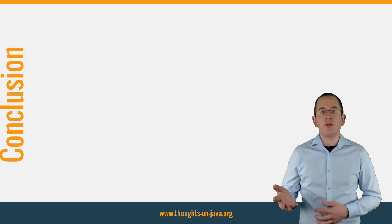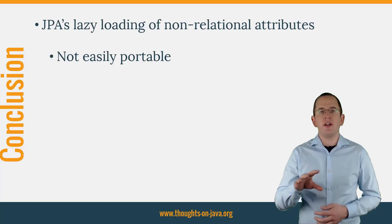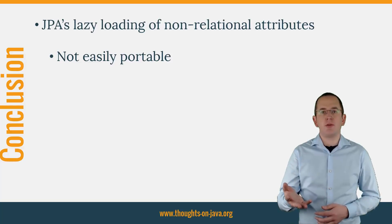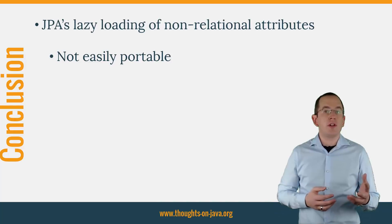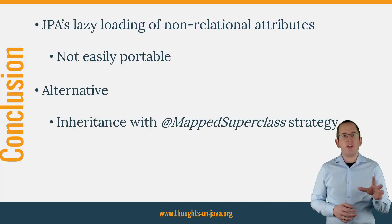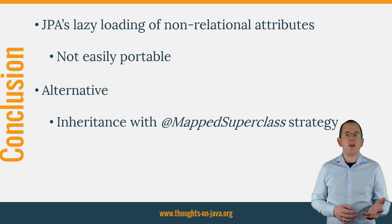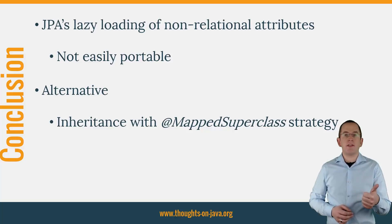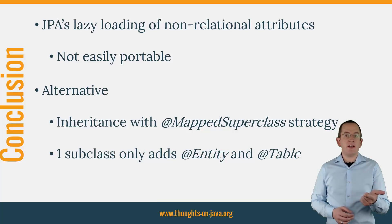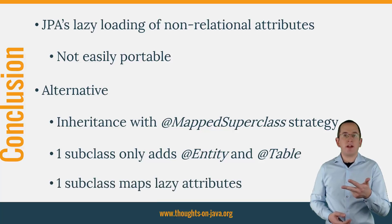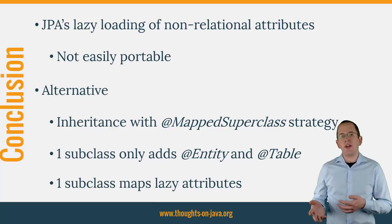Lazy loading of non-relational attributes is supported by the JPA specification, but it's only a hint. It depends on the implementation of your persistence provider whether it follows this hint or loads the attribute eagerly. If you need a portable implementation that doesn't rely on any provider-specific features and configurations, you should use an inheritance hierarchy to model the database table. The superclass gets annotated with MappedSuperclass and provides the mapping definitions for all eagerly fetched attributes. One subclass only adds an Entity and a Table annotation. The other subclass also gets annotated with Entity and Table and specifies the mapping of all lazily fetched attributes.